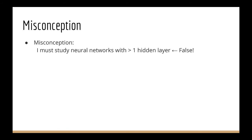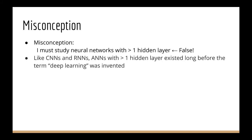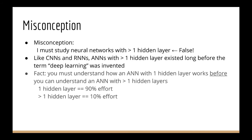Another misconception is that to be studying deep learning, the neural networks you're studying must have more than one hidden layer. This is also false, since neural networks with more than one hidden layer also existed and were researched long before CNNs and RNNs, and hence also predate the term deep learning. The fact remains, in order to understand how a neural network with multiple hidden layers works, you must first understand how a neural network with one hidden layer works. You simply can't skip this critical step, and it deserves a significant amount of attention, whereas adding more layers once you already know how to deal with one layer is significantly easier.